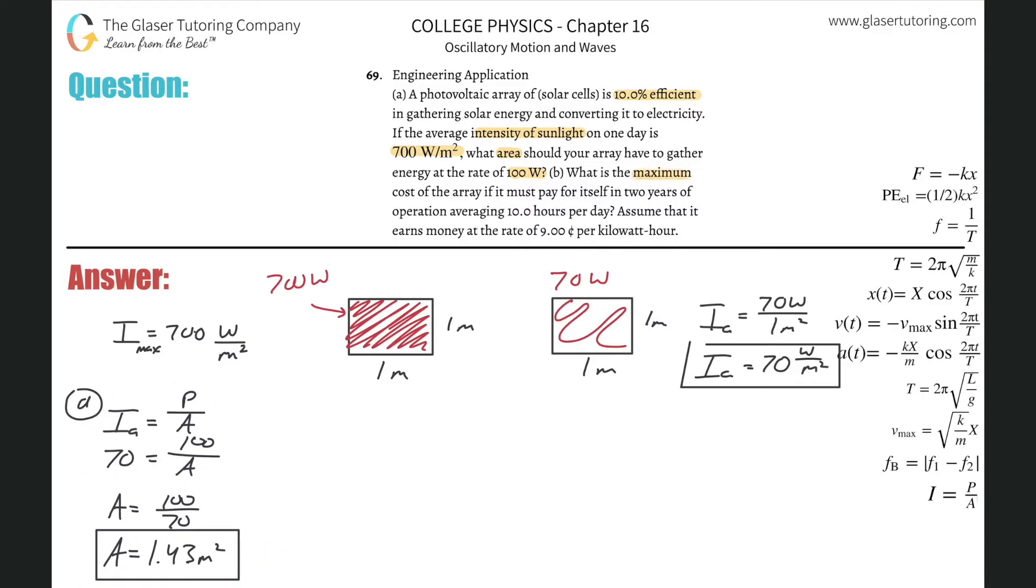So let me just move this all over because I see there's a part B. What is the maximum cost of the array if it must pay for itself in two years of operation averaging 10 hours per day? Assume that it earns money at the rate of nine cents per kilowatt hour. So first of all, I realize these problems get a little complicated because the units are all over the place.